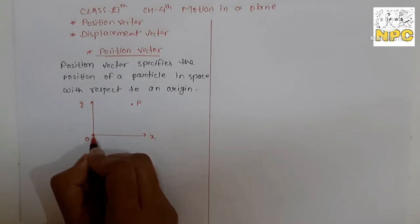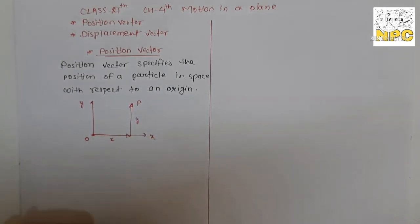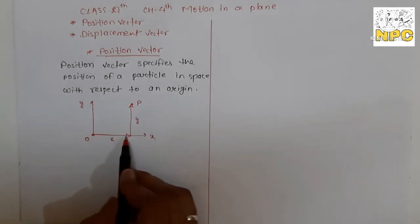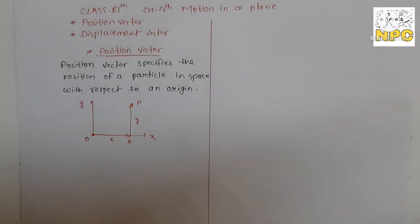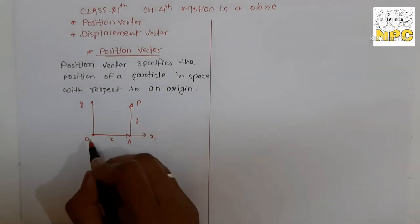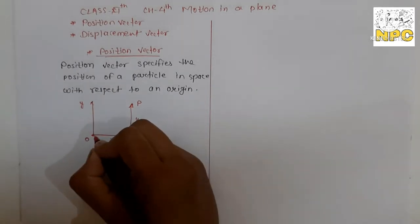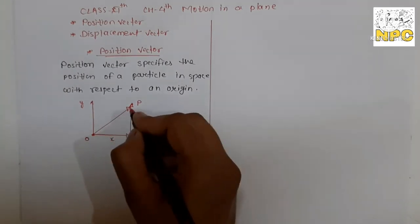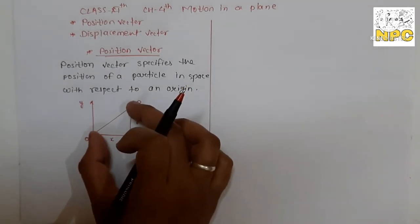We go from origin along the x-axis and y-axis to reach point P. Our path to go to point P is: O to A, and A to P. We are going with respect to O. If you don't have any reference point, you cannot tell the position of point P — you must take a reference point. This is called the origin: the intersection of the x and y axes. So to reach point P, you go O to A and A to P. This distance is called the position vector.